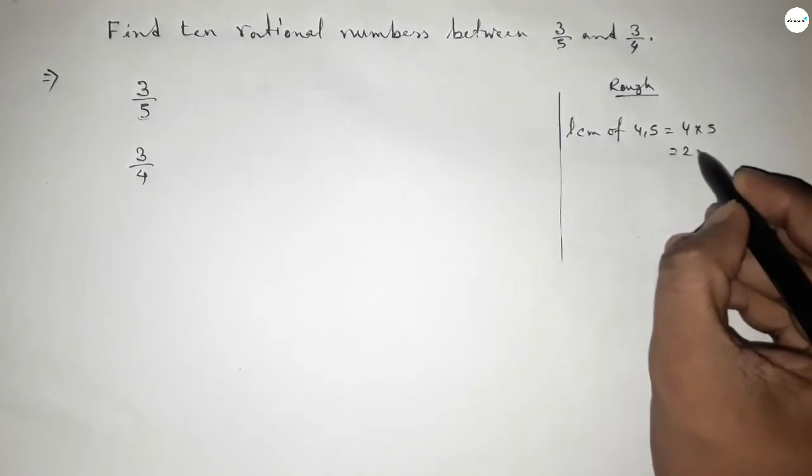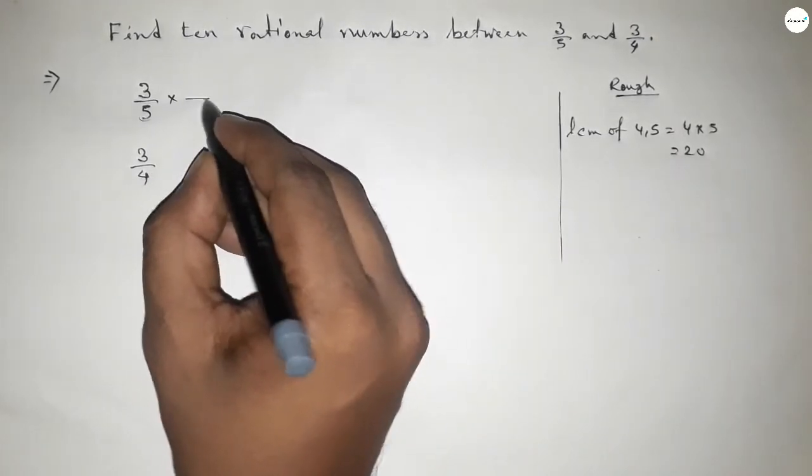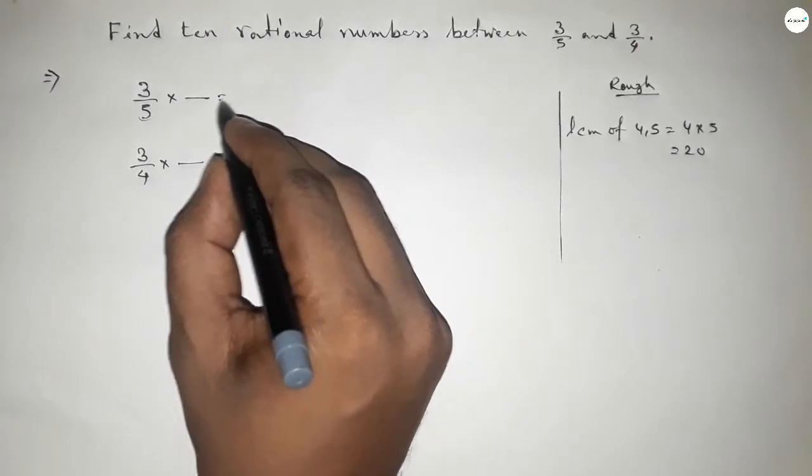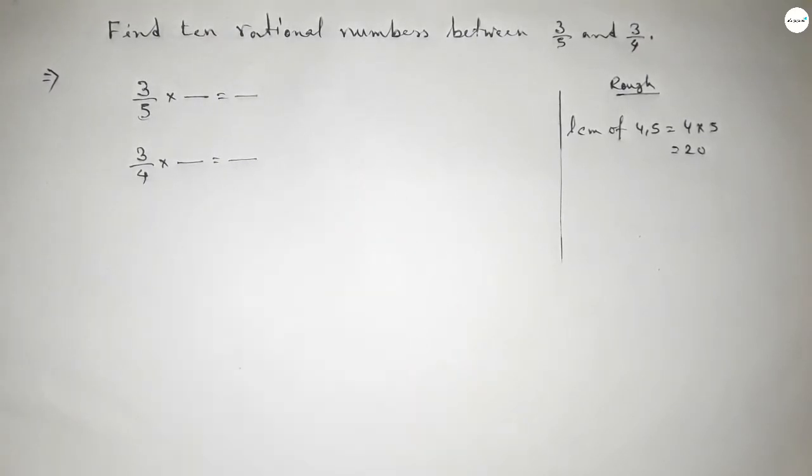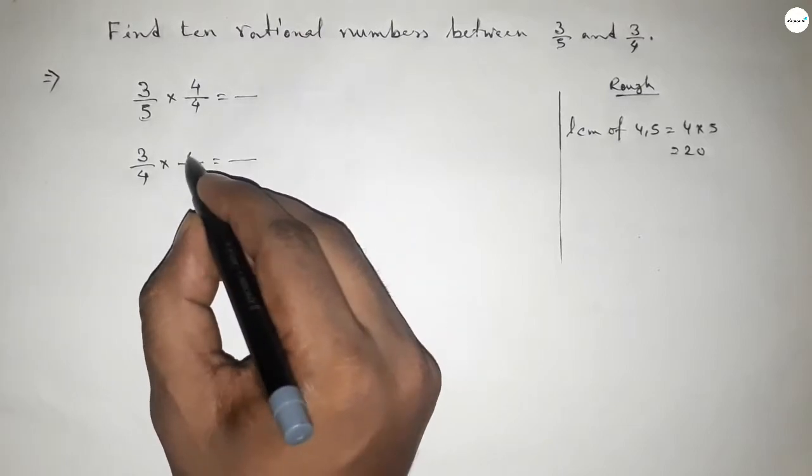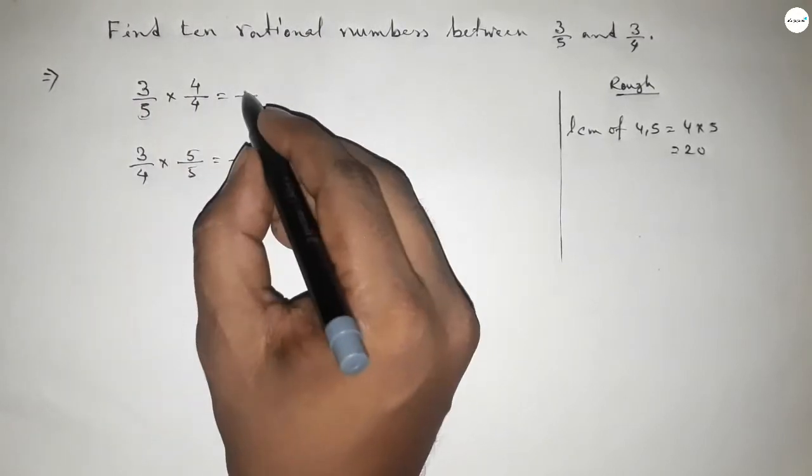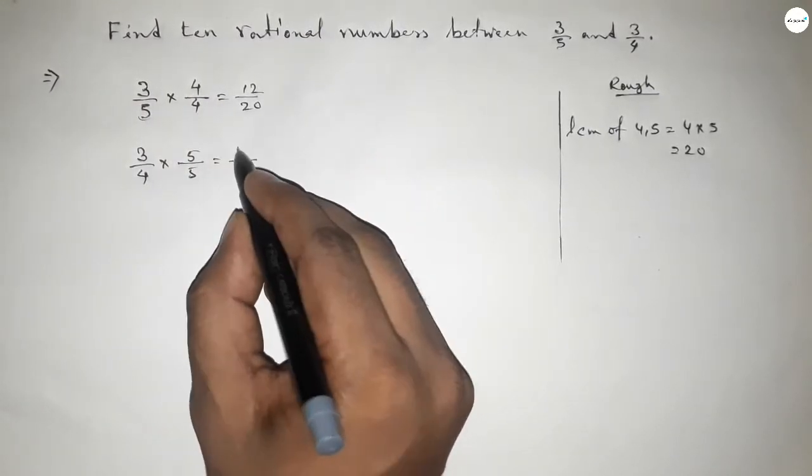Now what should be multiplying here and here to get denominator 20? If you put here up and down 4, and here put 5 up and down, then this is 12 over 20 and this is 15 over 20.